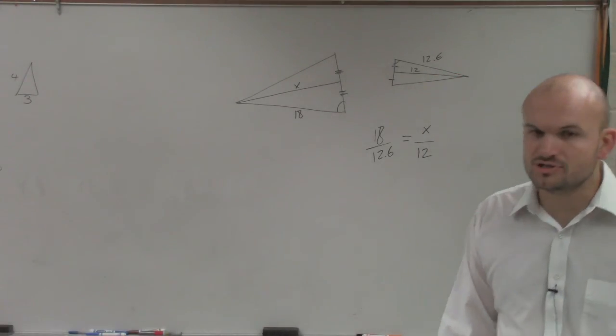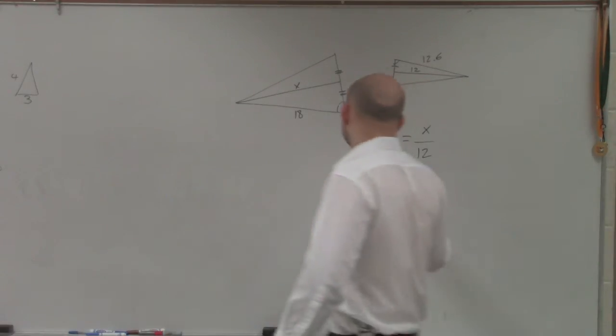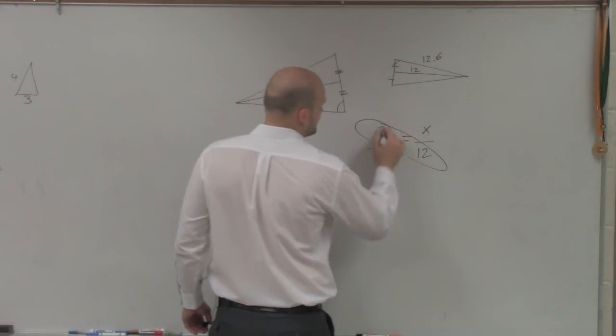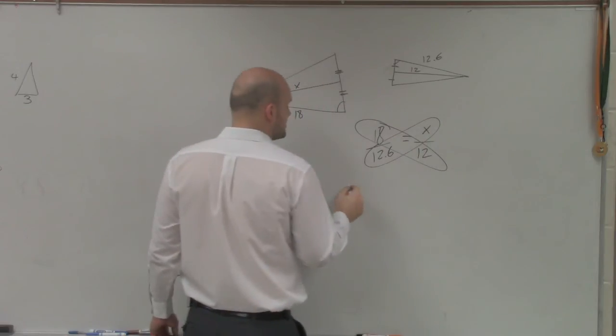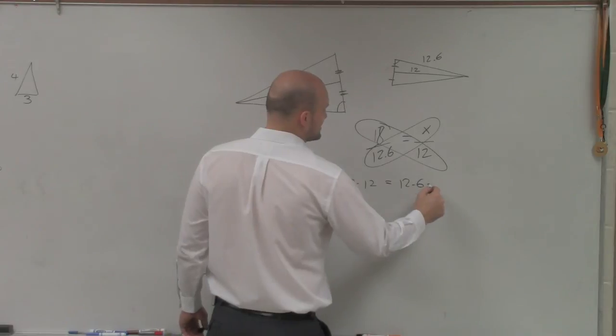So you set up your proportion, and now we just need to solve by cross-multiplying to solve the rest of this. So I say 18 times 12 equals 12.6 times x.